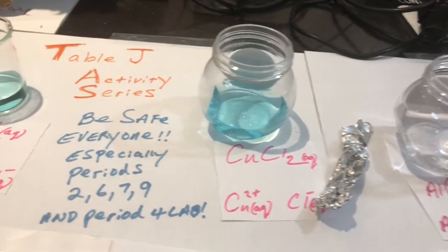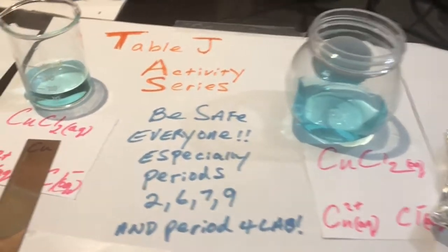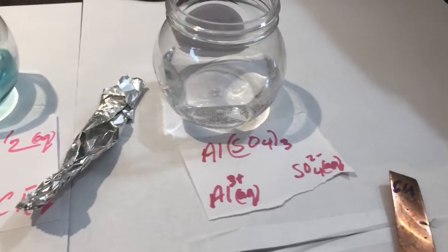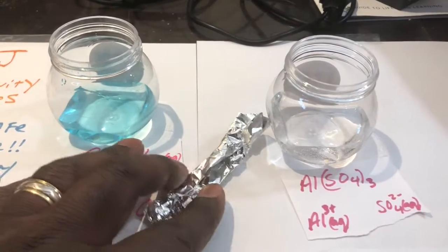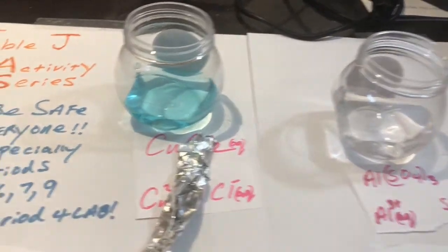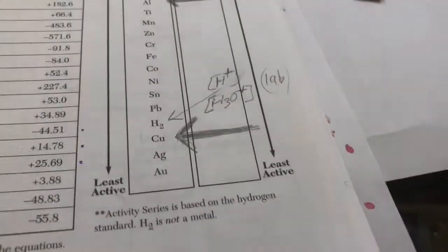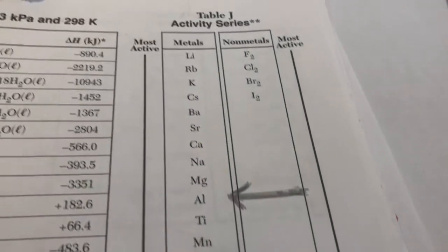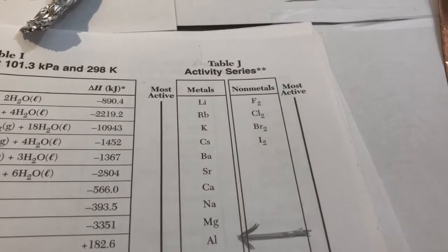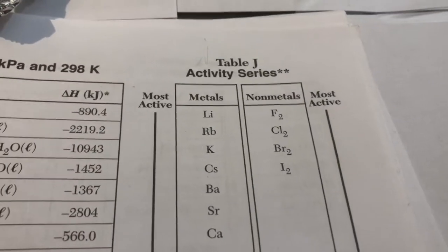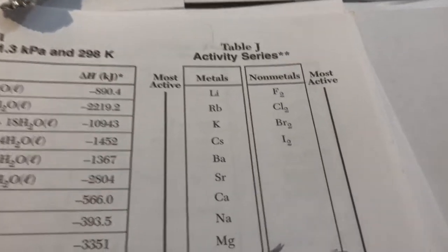Before I jump into the results, I want you guys to make a prediction in terms of whether setup 1, 2, or 3 is going to react. Are all three of them going to react, are none of them going to react, 2 of them, 1 of them? I want you to use Table J and analyze the situation. They introduced this activity series table, and we'll talk about it more now.